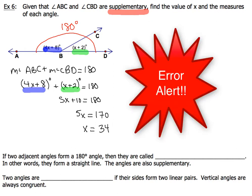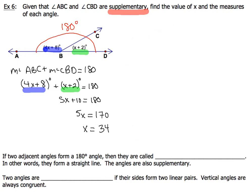Common error: people think they're done when they get x equals 34. You're not. Make sure that you read the question to figure out what it is you've got to find. In this case, we have to find the measures of each angle. So we're going to set up two equations, one for each angle, substitute the value we got for x into each one, and then determine the value of each angle.